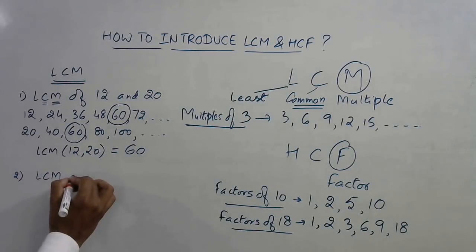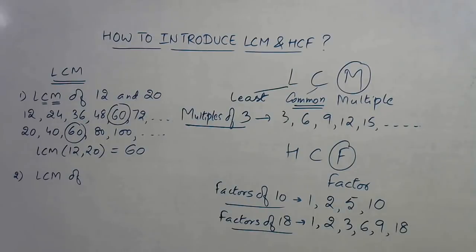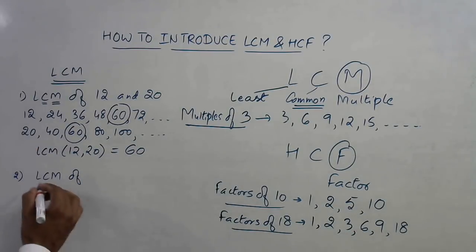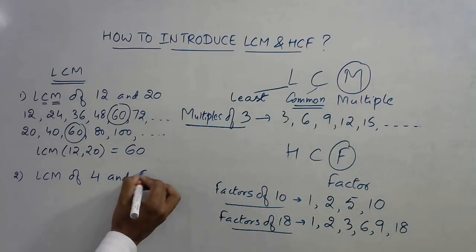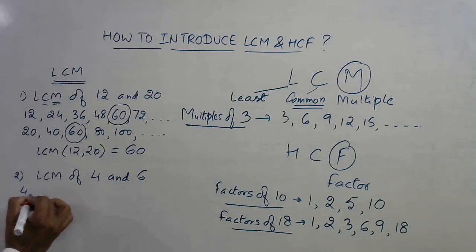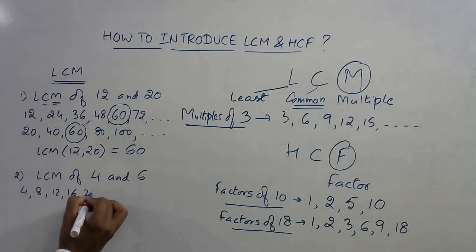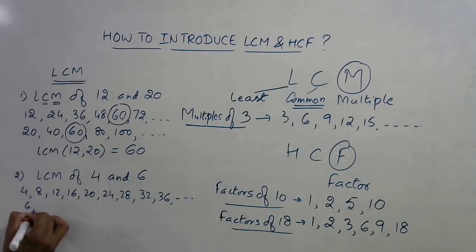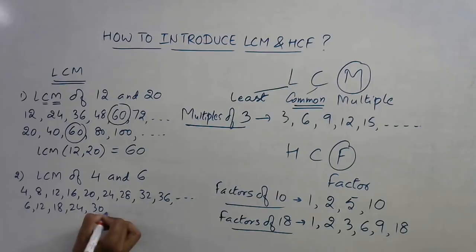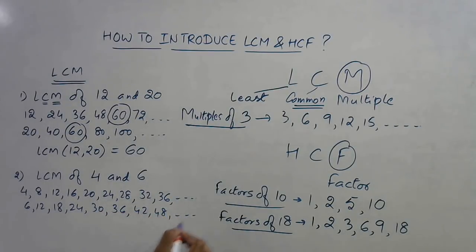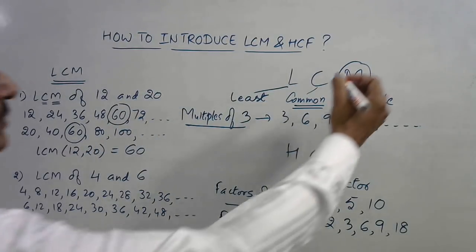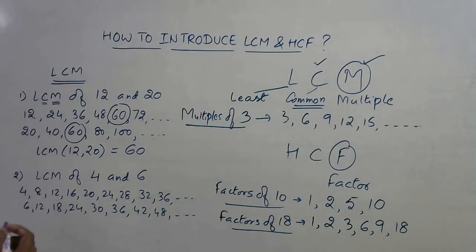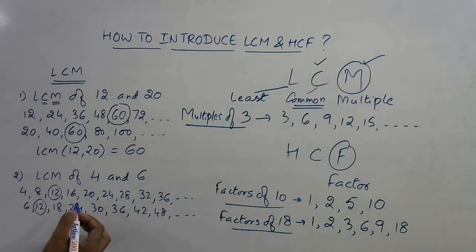Let's take another easy example — LCM of 4 and 6. When introducing a concept, always start with very easy examples so students can comprehend them easily. For 4, the multiples are 4, 8, 12, 16, 20, 24, 28, 32, 36, and so on. For 6, the multiples are 6, 12, 18, 24, 30, 36, and so on. M — multiples — is done. Now we approach C for common: 4 is not common, 6 is not common, 8 is not common, but 12 is common.